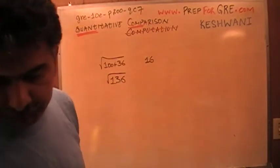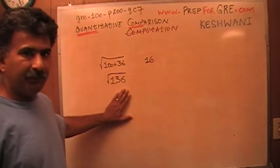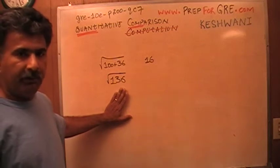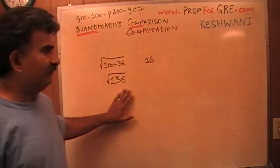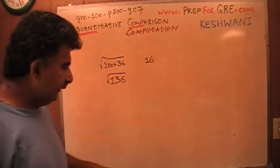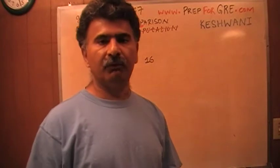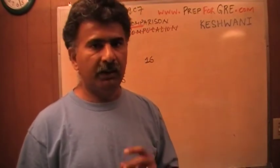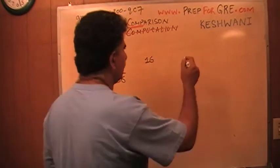The point here is not what this quantity is exactly. The point is, are you able to tell, very quickly, whether this quantity, whatever it is, if it is more or less than 16. And for that, there are some basic squares that you must know by heart. Before you sit for the exam, I'm going to put them on the blackboard. If there is anything that you do not know by heart, memorize them. You must know them by heart.